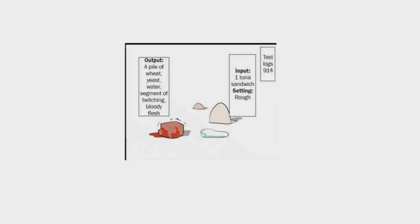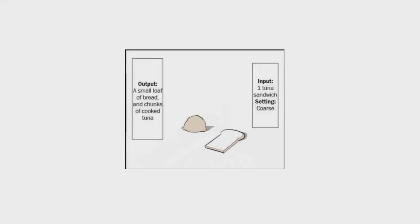Test Logs 914. Input: one tuna sandwich. Setting: rough. Output: a pile of wheat, yeast, water, and a segment of twitching bloody flesh which appeared to be alive despite not having any usable organs.